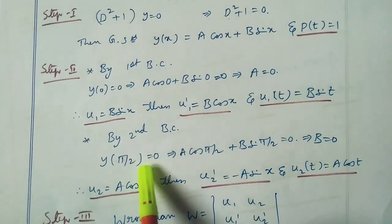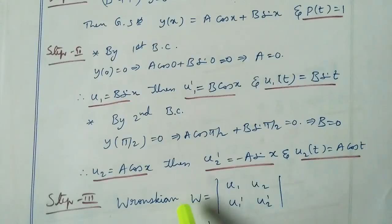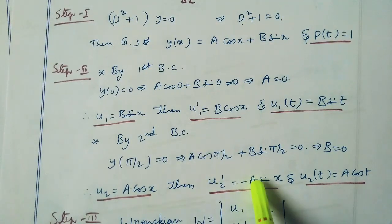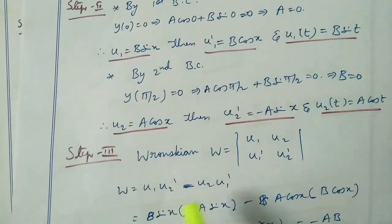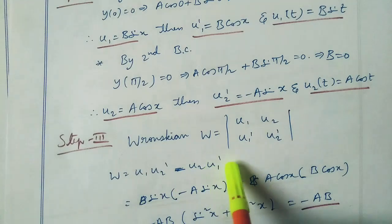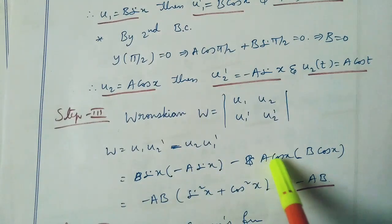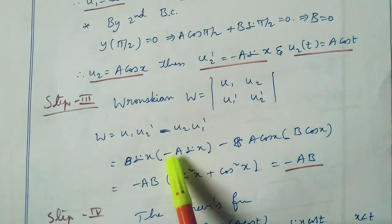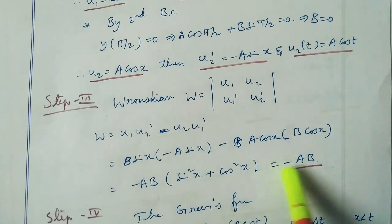By applying the second boundary condition y(π/2) equal to 0: a·cos(π/2) plus b·sin(π/2) equal to 0. Since cos(π/2) is 0 and sin(π/2) is 1, we get b equal to 0. Therefore u2 equal to a·cos x. Then u2 dash equal to minus a·sin x, and u2(t) equal to a·cos t. The Wronskian W equal to u1·u2 dash minus u2·u1 dash equals b·sin x into minus a·sin x minus a·cos x into b·cos x, giving W equal to minus ab(sin²x plus cos²x) equal to minus ab.